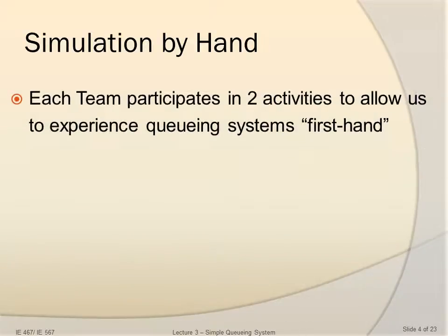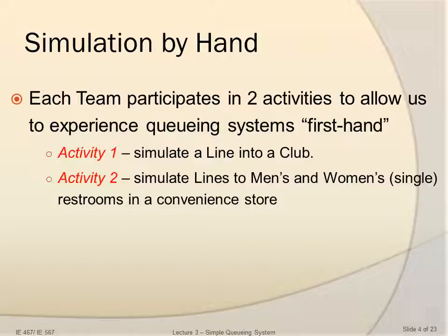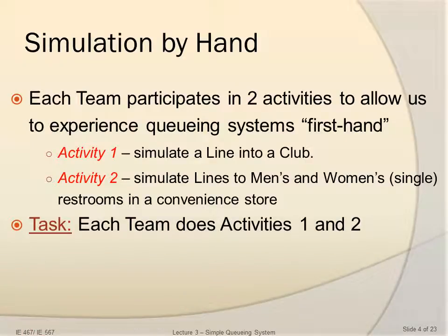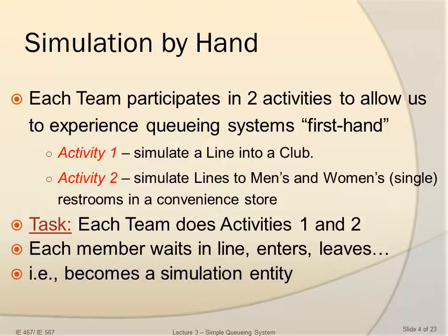Simulation by hand. Each team will participate in two activities to allow us to experience first-hand queuing systems. In Activity 1, we will simulate a line into a club. In Activity 2, we will simulate lines into men's and women's single restrooms in a convenience store. The task is for each team to do Activity 1 and 2. Each member will wait in line, enter, leave, and so on. This way, each and every one of you becomes a simulation entity.